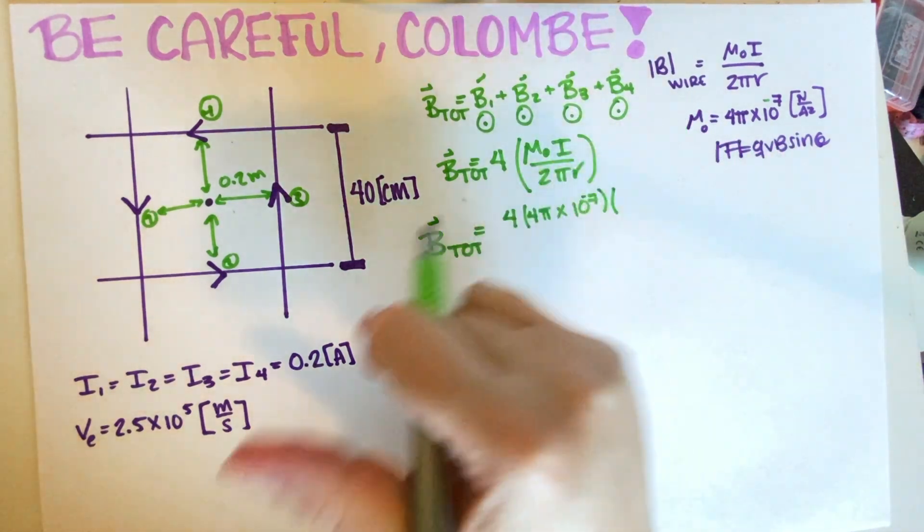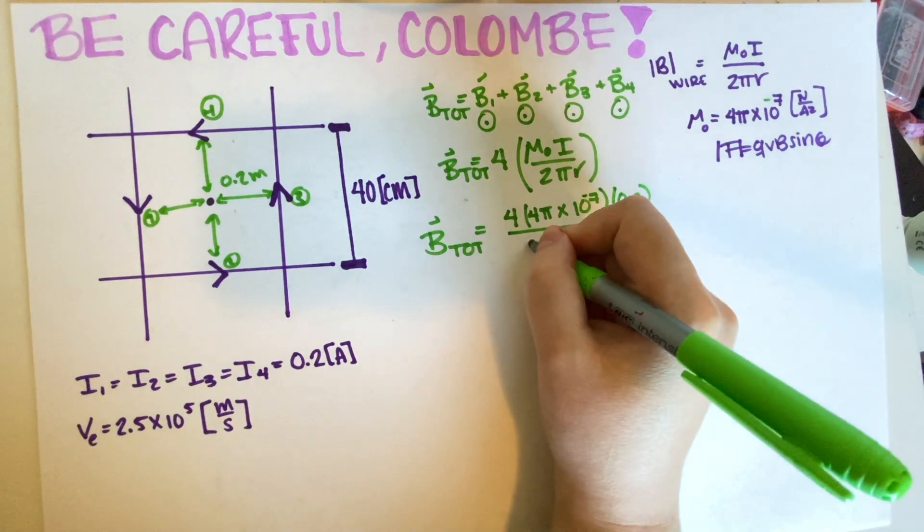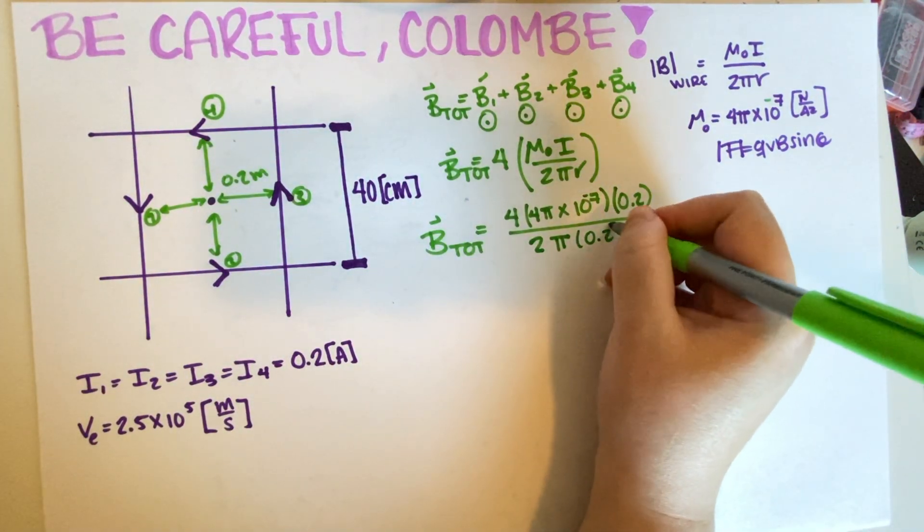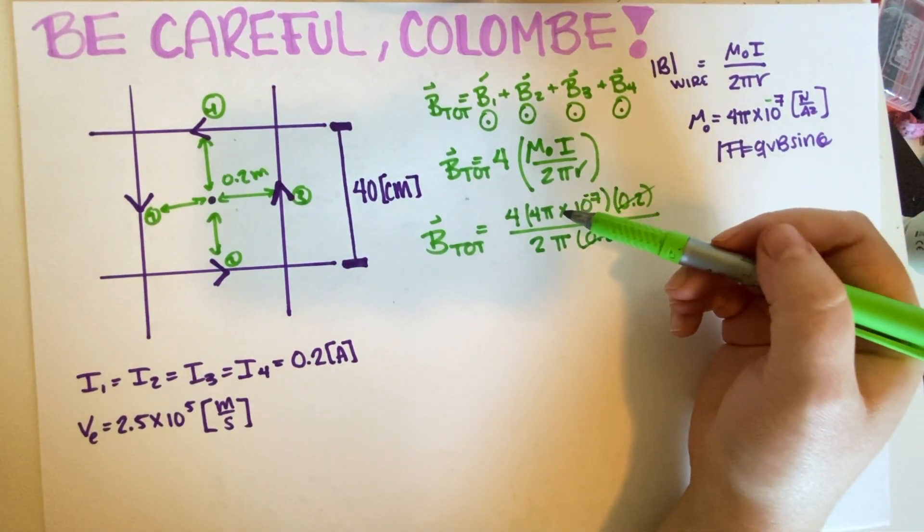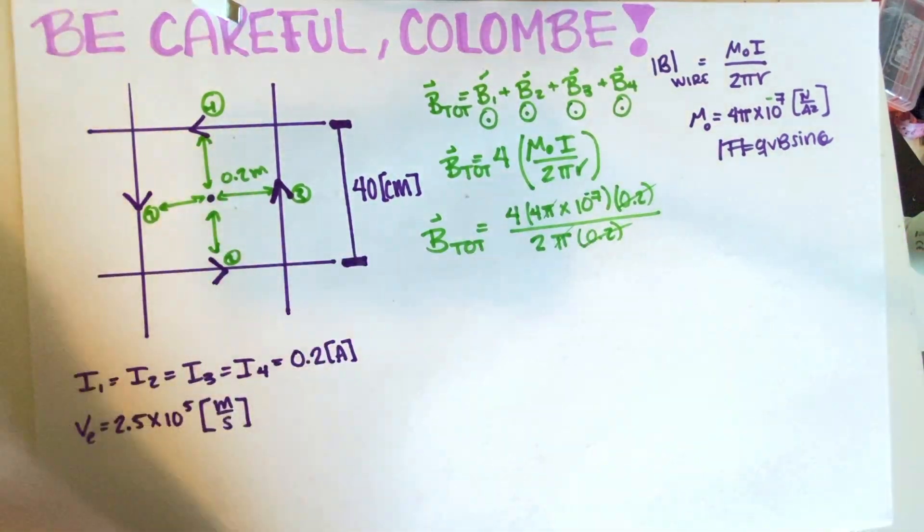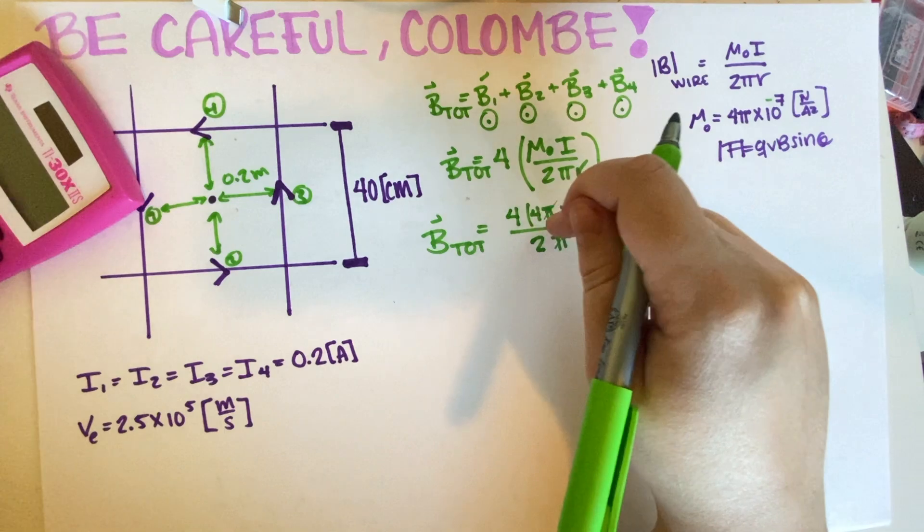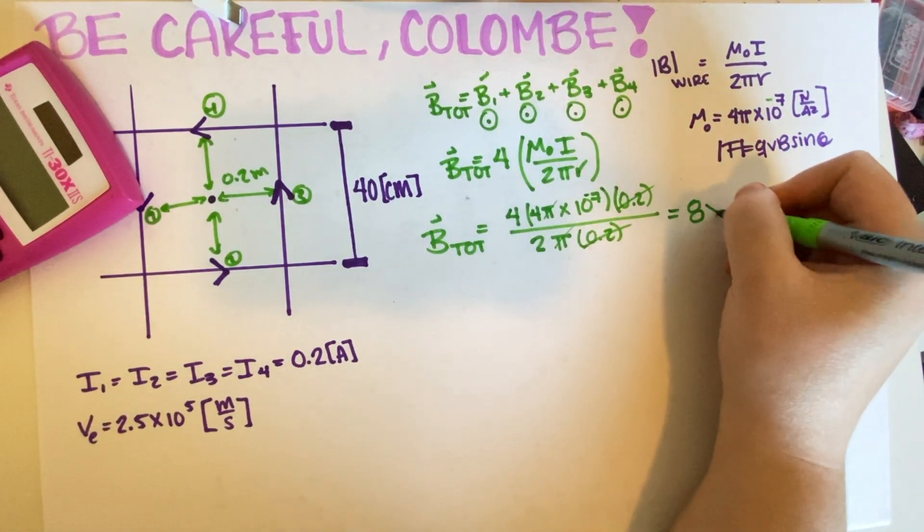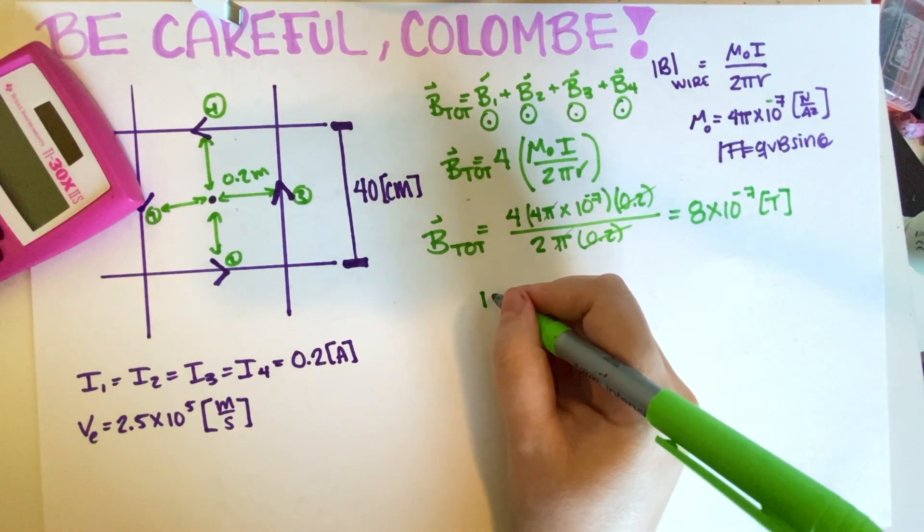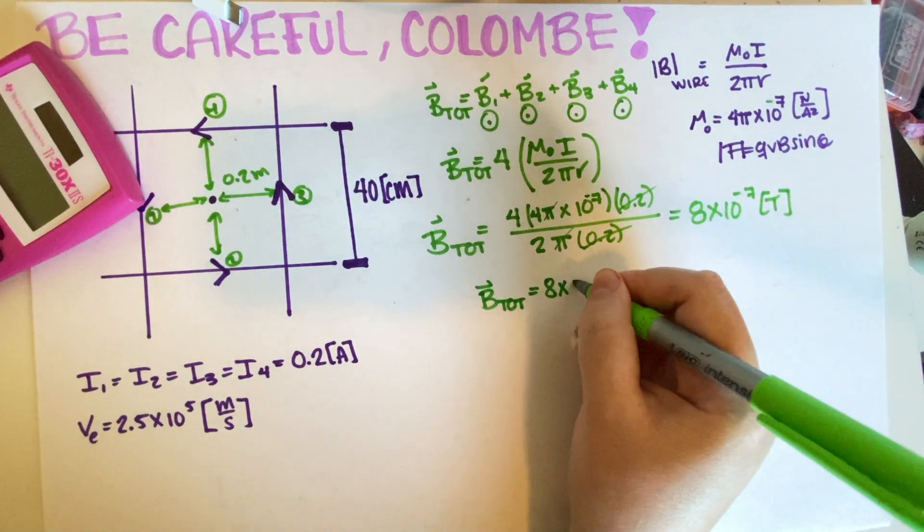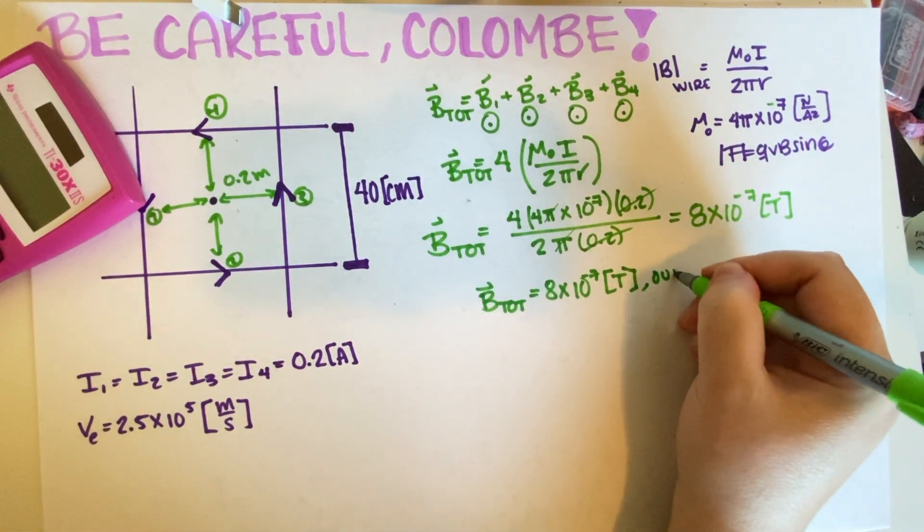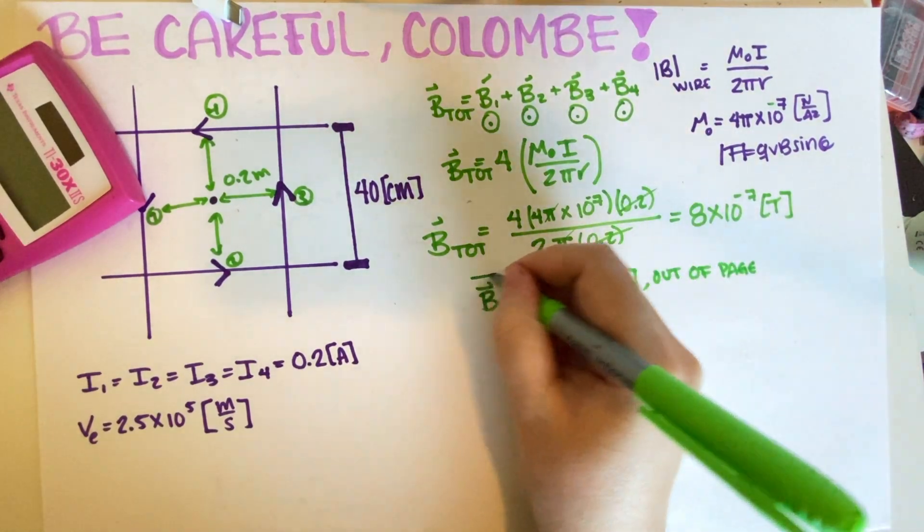Then I is equal to 0.2. And then this is 2 pi. And then R is also equal to 0.2. So this will cancel out with each other. And then these pis cancel with each other. So basically eight. Yeah, I don't really need a calculator because this is just going to be 16 divided by two. So this is eight times 10 to the negative seven. Final answer. So my final answer is B total is equal to 8 times 10 to the negative seven. Then I need my units. And then I need my direction, which is out of page. Final answer part A.